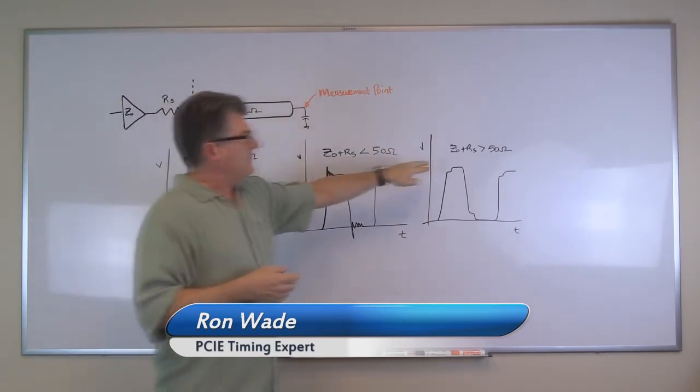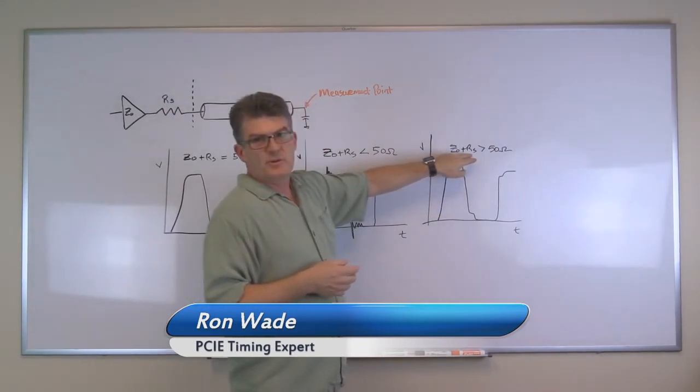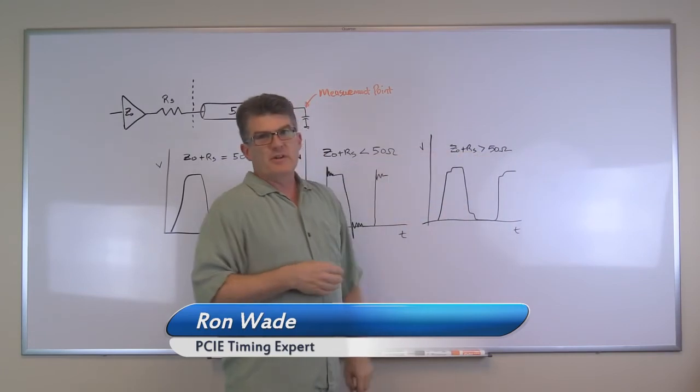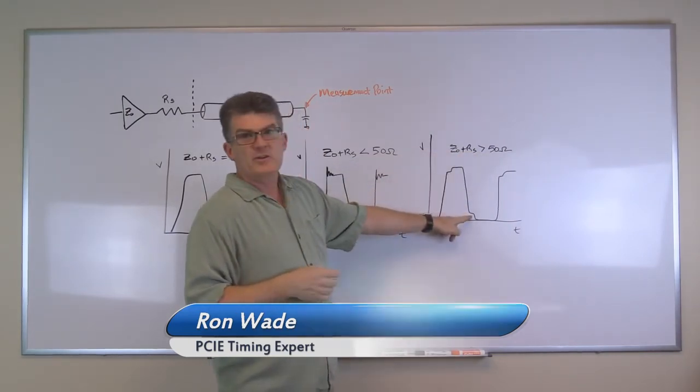The other case is when the output impedance of the driver and the series resistor, the sum of those, is greater than 50 ohms. That's when you'll see a step on the rising edge and the falling edge of the clock.